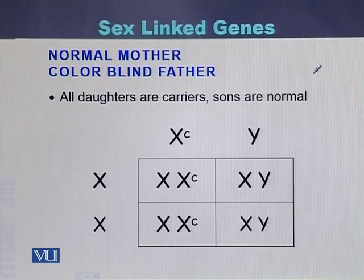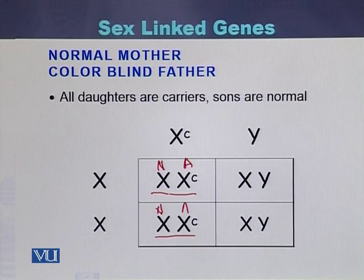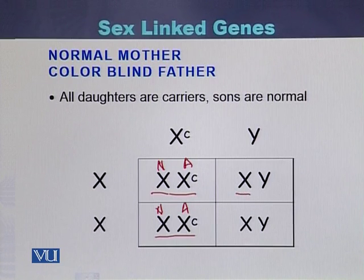In this cross, each daughter is XX — both have one normal allele and one affected allele on their X chromosomes. In the case of sons, they have one X chromosome and one Y chromosome, with no affected allele, so the sons will be normal.